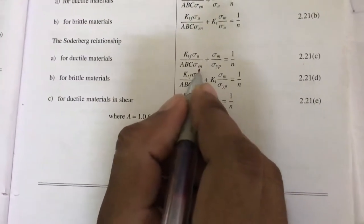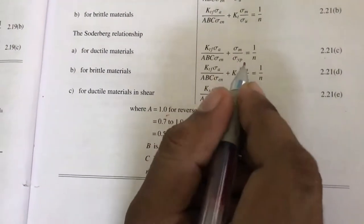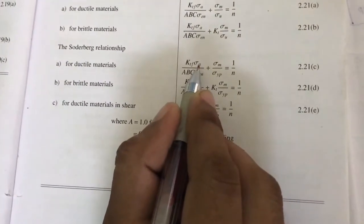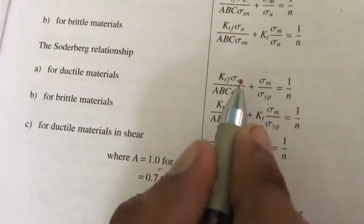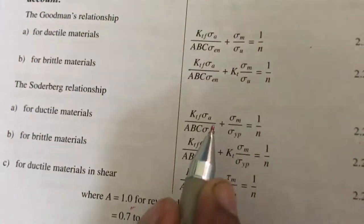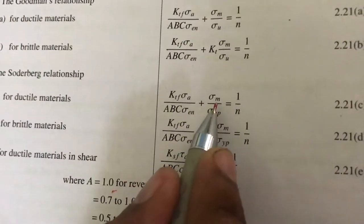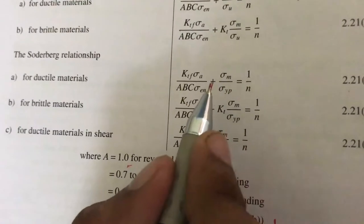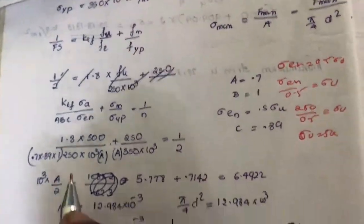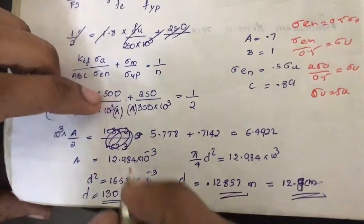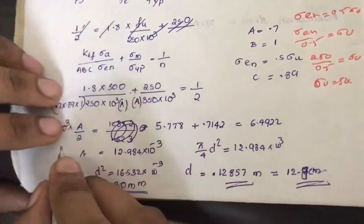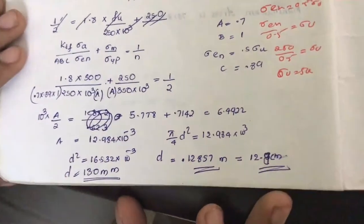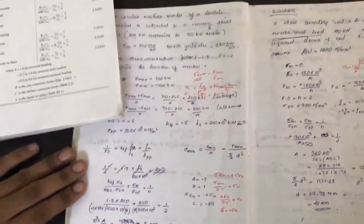Sigma En is given in the question. Substituting sigma A as 500/(pi/4 * D²) and sigma M as 250/(pi/4 * D²) into the Soderberg equation — where D is the unknown — with all other values known, we substitute the area A = pi/4 * D² and from the formula we can solve to get the value of D.